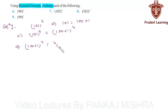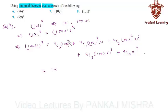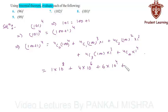(100 plus 1)⁴ equals 4C0·100⁴ plus 4C1·100³·1 plus 4C2·100²·1² plus 4C3·100·1³ plus 4C4·1⁴. This is equal to: 4C0 is 1, into 100⁴ which is 10⁸, plus 4C1 is 4, into 100³ which is 10⁶, plus 4C2 is 6, into 100² which is 10⁴, plus 4C3 is 4, into 100, plus 4C4 is 1, into 1⁴ which is 1.